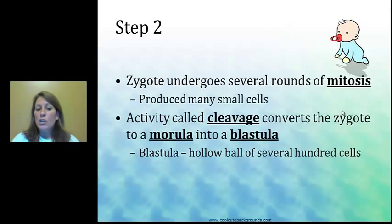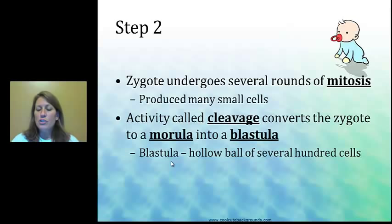The zygote is undergoing mitosis. The morula is 32 cells — a ball of 32 cells — and a blastula becomes a blastocyst, which is a hollow ball. The suffix '-ula' defines the stage, while '-cyst' on the end defines the structure.